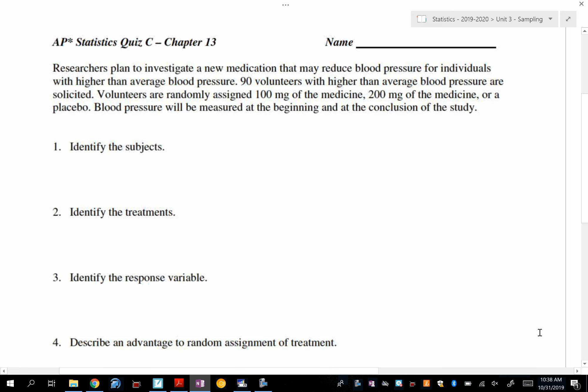Okay, so let's talk about Quiz C. After reading this paragraph, what are the subjects for this scenario? Very good, but you want to be specific Jarvis. These specific 90 volunteers with higher than average blood pressure.